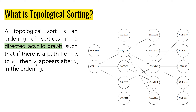Similarly if someone has to study MAD 2104, he has to fulfill the requirement of studying MAC 3311 and COP 3310. So what topological sorting does is arrange all these vertices in a linear order in which each course's prerequisite comes before that course. For example, in a topological sorted order, if MAD 3512 is there, then the prerequisite courses should come before MAD 3512 in the list.